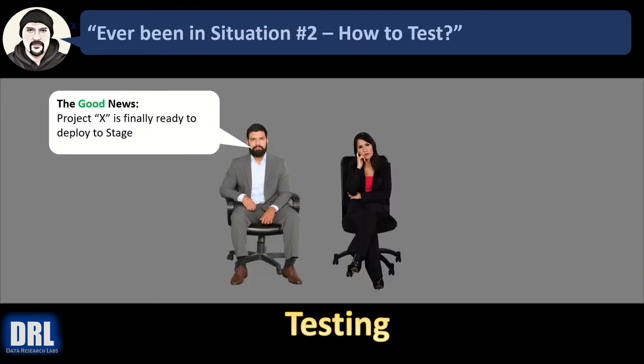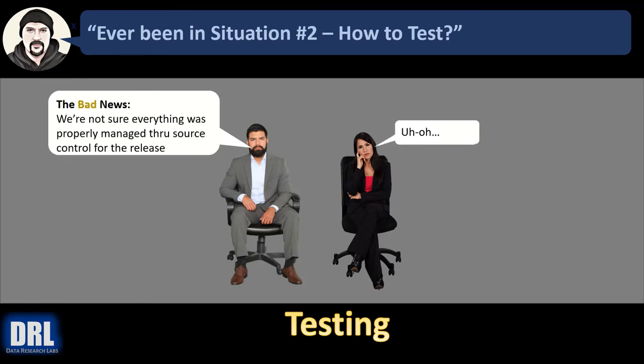Or maybe you've been in this situation trying to figure out how to test. Your project manager says the good news is project X is finally ready to deploy to stage. The bad news is we're not sure everything was properly managed through source control for the release. You'll need to compare against dev and test environments to check for any missing elements that didn't make it out to stage.